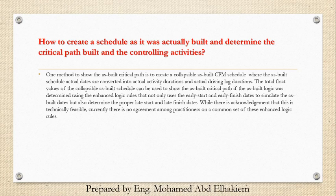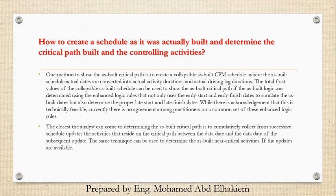The closest the analyst can come to determining the as-built critical path is to cumulatively collect from successive schedule updates the activities that reside on the critical path between the data date and the data date of the subsequent update. The same technique can be used to determine the as-built near-critical activities if the updates are available.